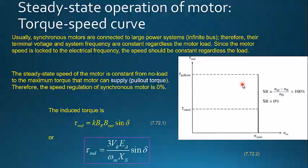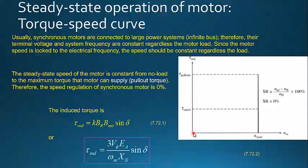Because of that, the speed of the motor will never change regardless of the load connected, because the speed is proportional to frequency. Since the frequency is constant, irrespective of the load connected we will have the same motor speed. We say that since the motor speed is locked to the electrical frequency, the speed should be constant regardless of the load. On this graph, at zero torque the speed is at a certain point, and even when we increase to rated torque or continue to the maximum torque, the speed still remains the same.